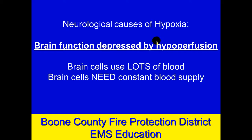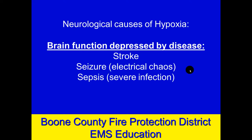Brain function could also be depressed simply by hypoperfusion — just not getting enough blood flow. The brain needs lots of oxygen and lots of glucose, and it gets those from the bloodstream, so blood supply is very important to the brain. Neurologic causes that could cause the brain not to function well include strokes in certain parts of the brain, or a seizure — which is simply brain function gone wild, just electrical chaos in the brain. Then severe infection can do the same thing: sepsis or severe systemic infection from pneumonia, urinary tract infection, or whatever the infectious agent is, causing the brain to not function well.